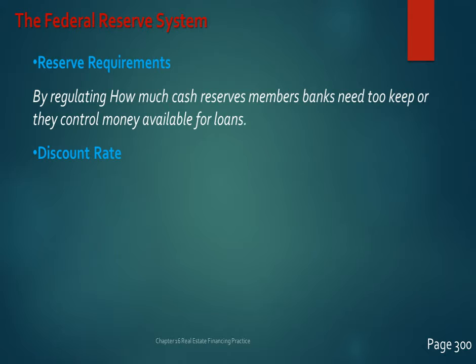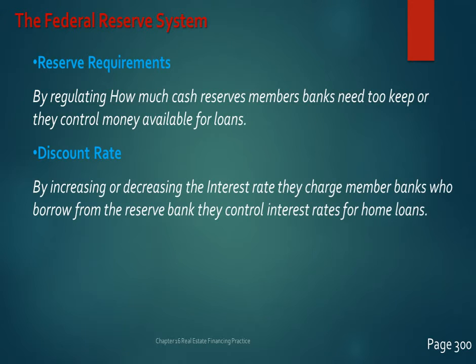The second tool is the discount rate — the interest rate that banks pay when they borrow from the Federal Reserve. They don't do that very often. Your book presents this as a major tool, and while it is a tool, it's not the biggest one they use.